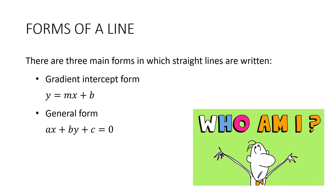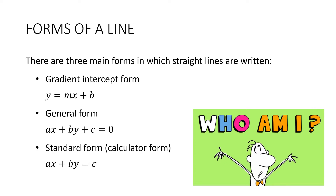There's also a general form — that's where I put the x's first, followed by the y's, followed by any numbers, and then put it equal to 0. And then finally there's standard form. I sometimes call this calculator form, because it's how you put it into a graphics calculator. That's where we have the x's plus the y's equal to a number.